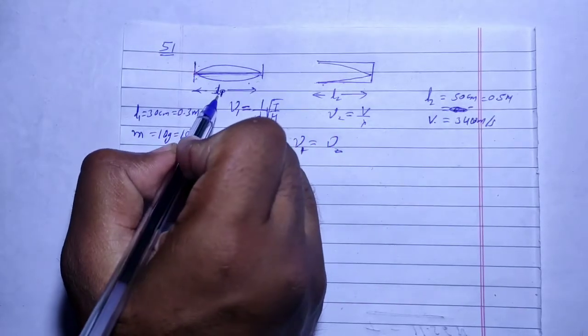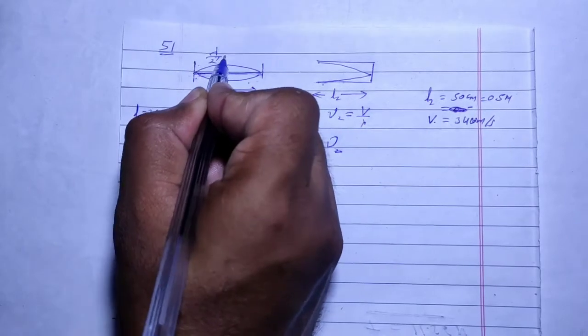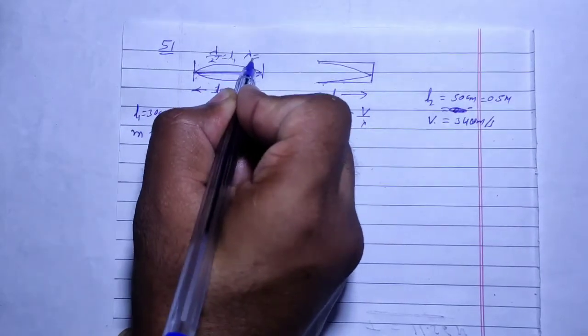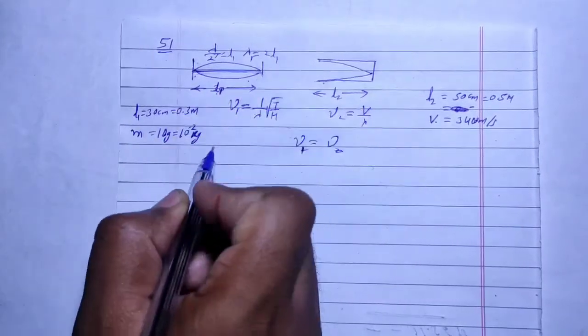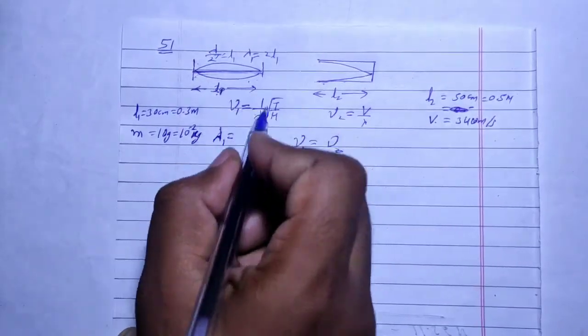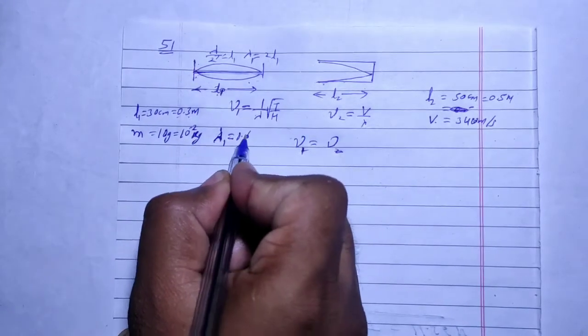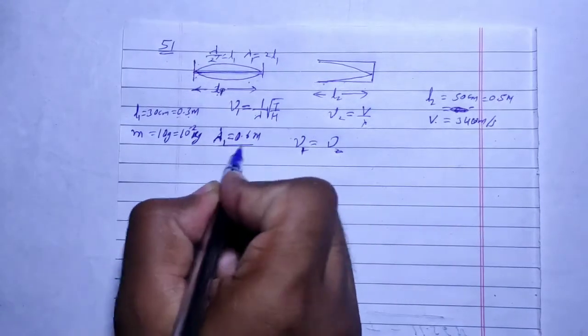Lambda by 2 is equal to L1, so lambda is equal to what? Lambda 1 equals 2 times L1. L1 is 0.3, so lambda 1 equals 2 times 0.3, which is 0.6 meters. This is the wavelength.